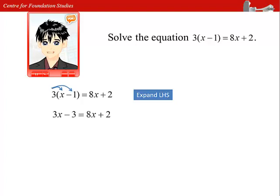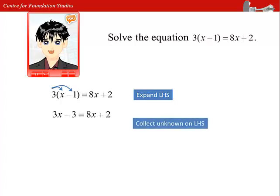Hence, we get 3x minus 3 equals to 8x plus 2. Collecting the unknown, we have 8x minus 3x equals negative 3 minus 2. Simplifying further, we get x equals to negative 1.